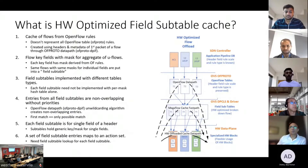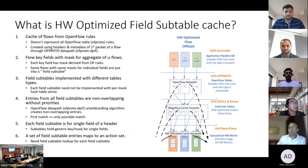So just to briefly go over what is the field sub-table cache: the field sub-table cache is still a cache. It is still mega flow entries in that it is not a microflow. It captures, using masks, more than one field combination, but it is now more flexible, so it can be implemented using different data structures. The entries are still non-overlapping, so there are no priorities in these tables. The resulting data plane, if we implement this, is that a combination — a set of field sub-table entries that map to an action set — is not one-to-one.